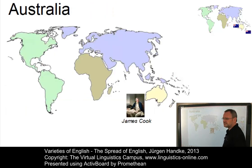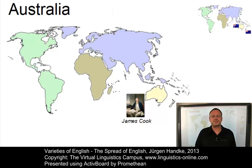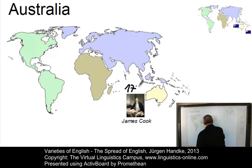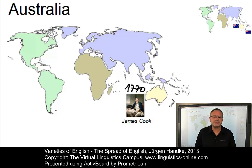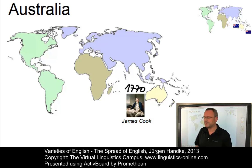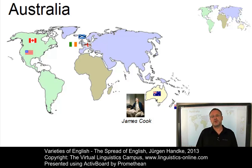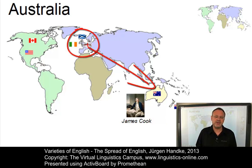In Australia, Britain established its first penal colony at Sydney after James Cook's visit in 1770, in order to relieve the pressure on the overcrowded prisons in England. The approximately 130,000 prisoners were followed by a wave of settlers. By 1850 the population of Australia was about 400,000, and by 1900 nearly 4 million. Today, almost 18 million people live on the Australian continent. The British Isles provided the main source of settlers and thus the main influence on the language.